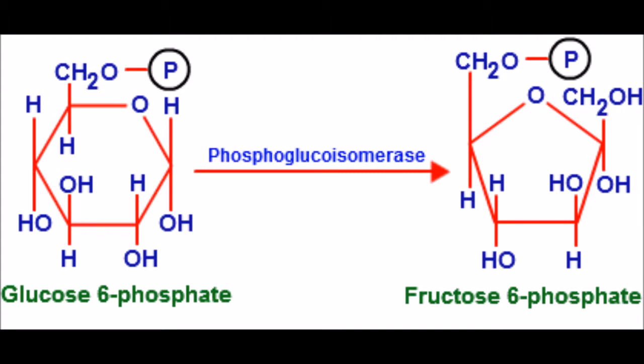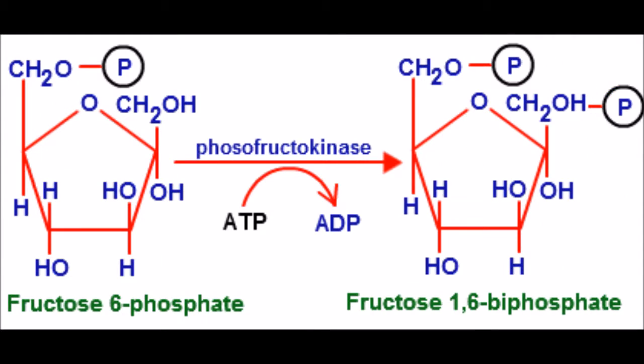With the help of the enzyme phosphofructokinase 1, PFK1 for short, fructose 6-phosphate is converted into fructose 1,6-bisphosphate.